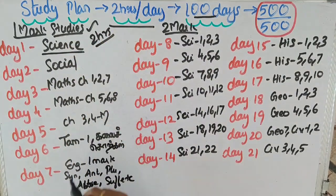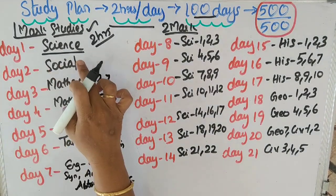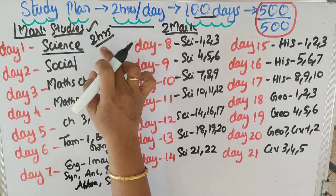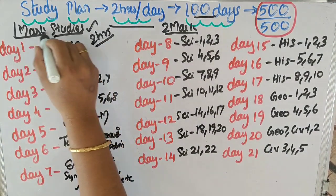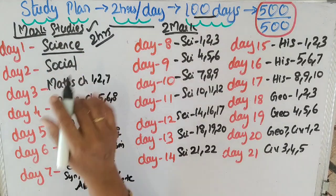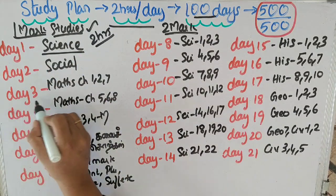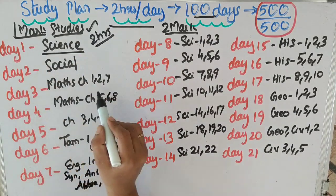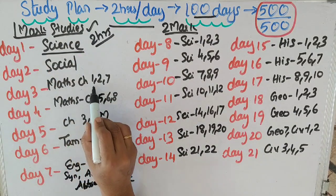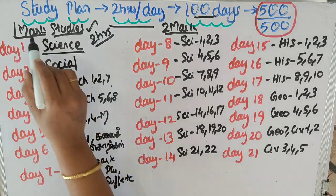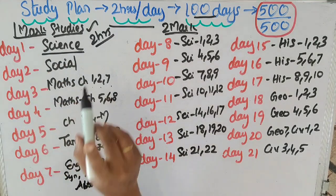On day 1, you have two hours, and you have to spend 1 mark. On day 2, you have to spend 1 mark. On day 3, you have to spend 1 mark - one mark is about what you do.